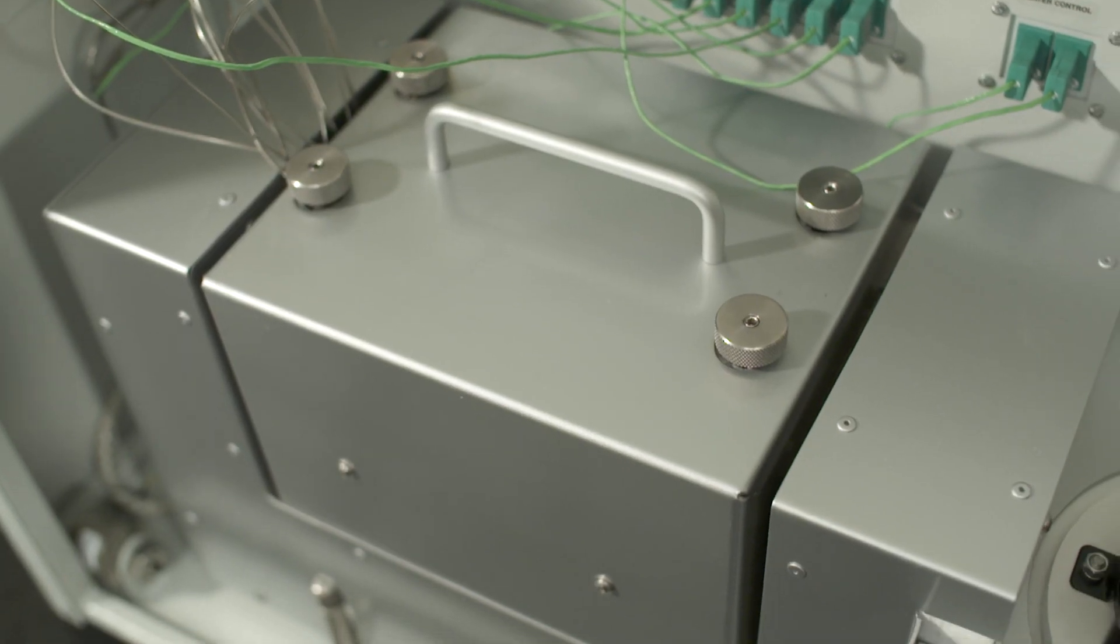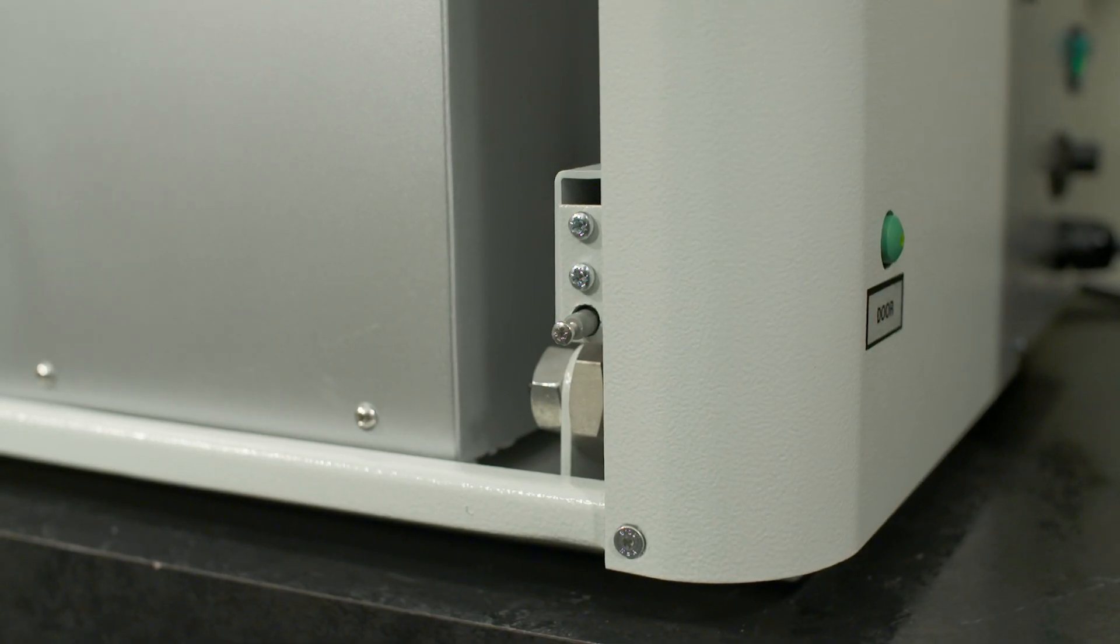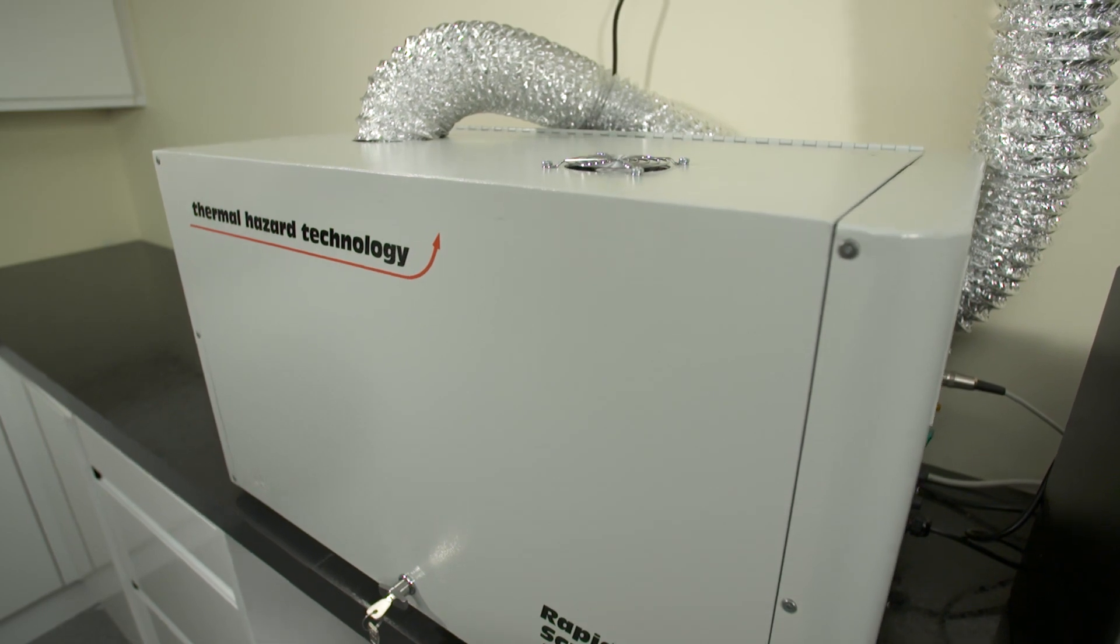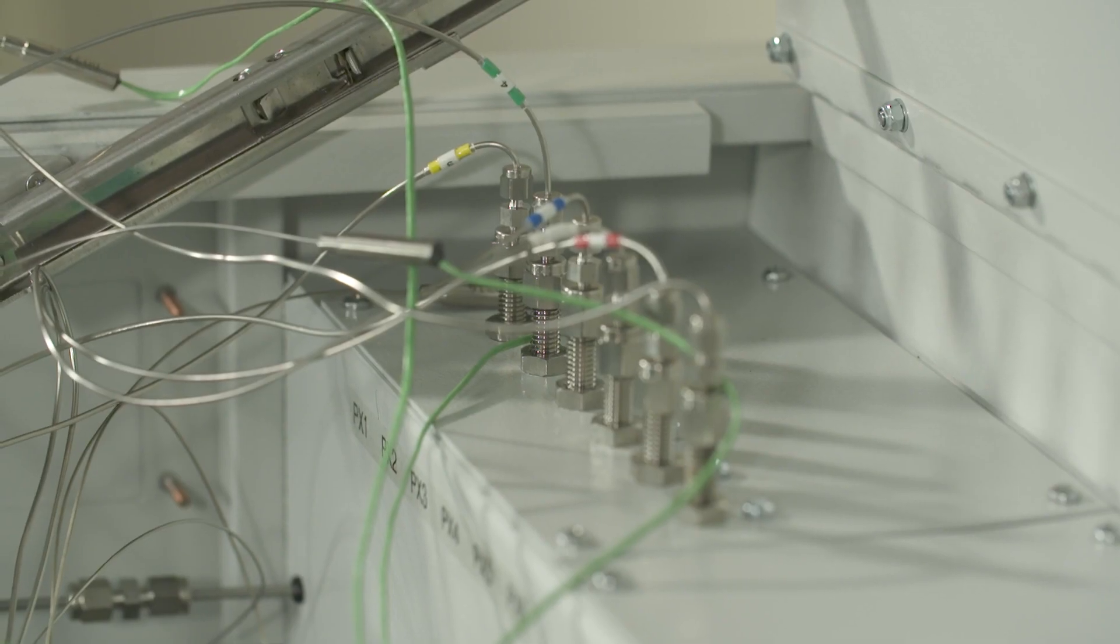The calorimeter is housed within an explosion proof steel enclosure with safety interlocks and a door sensor. An extractor fan removes noxious odours during testing. Six thermocouple connections and six pressure connections are present.